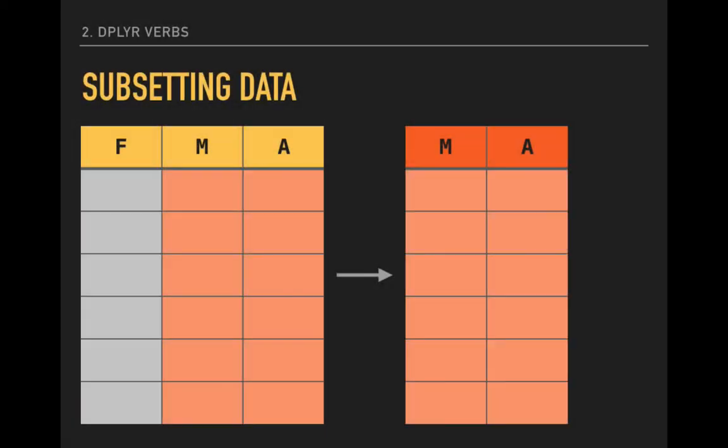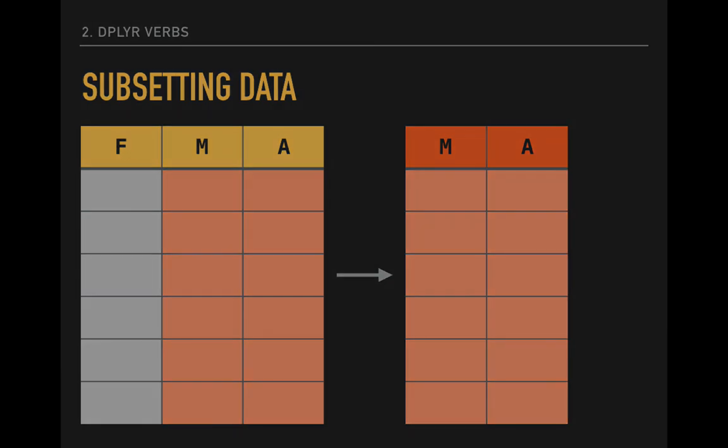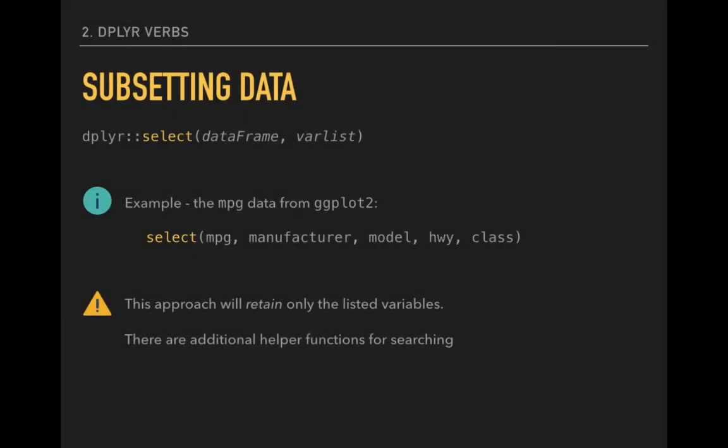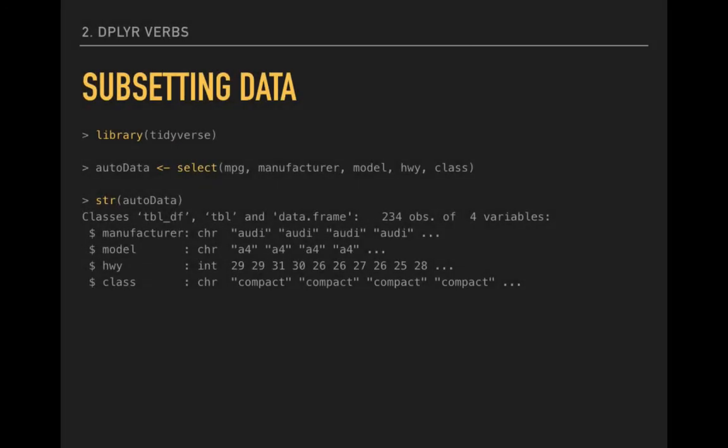We can subset our data another way, based on selecting particular variables we want to retain and discarding variables we are not interested in. This change to our data is premised on the verb SELECT. We can select variables we want to keep, as we do here with a number of variables in the MPG data frame. This example would give us a data frame with all the observations still intact, but with the data only for the four variables we listed, as shown here.